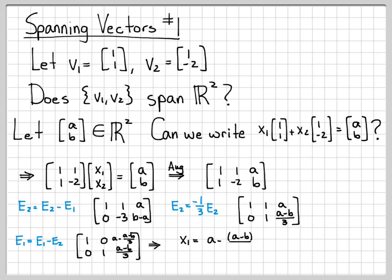Now by looking at this, it's very easy to see that x1 equals a minus (a-b)/3, and x2 equals (a-b)/3. I've been able to find numbers x1 and x2 that make this equation true for any value of [a,b] that I want to choose. We've chosen this arbitrary element from R², and I've been able to find these coefficients that make this equation true for any arbitrary element from R². So yes, these vectors do span R².